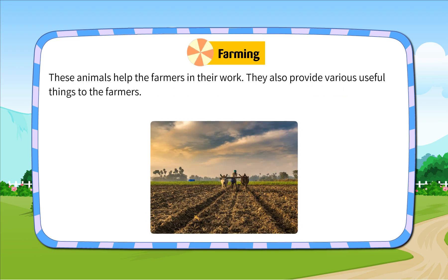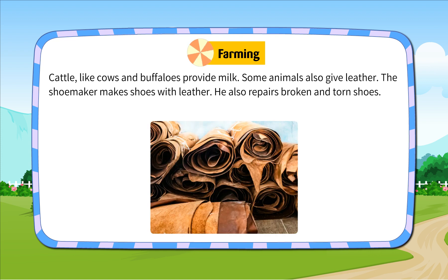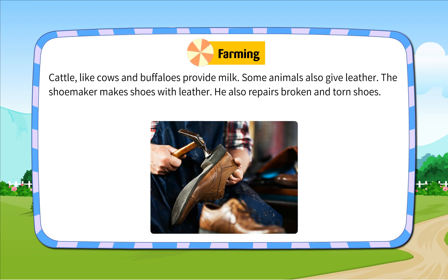These animals help the farmers in their work. They also provide various useful things to the farmers. Cattle like cows and buffaloes provide milk. Some animals also give leather. The shoemaker makes shoes with leather. He also repairs broken and torn shoes.